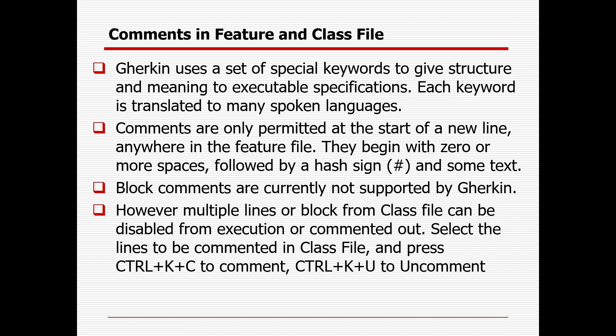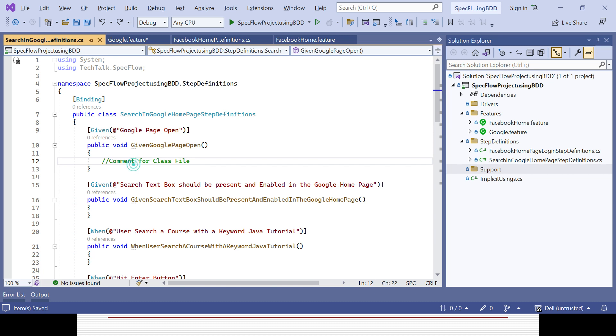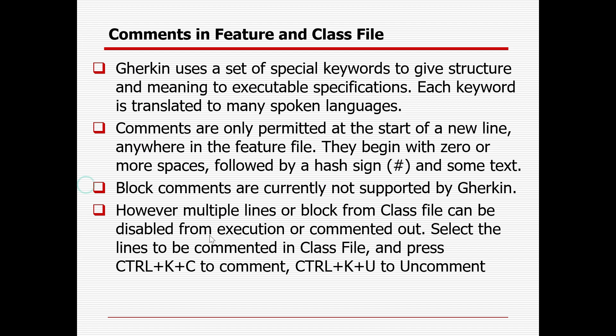So that is the two ways you can comment out: for the feature file, only single-line comment is possible with the help of the hash sign. In the class file, you can comment out a single line with double slash, and for multiple lines you select them and press Ctrl+K+C to comment and Ctrl+K+U to uncomment.